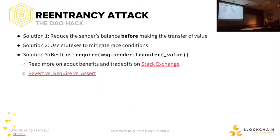There's also solution three: use require(message.sender.transfer(value)). What transfer does is it checks whether balances are correct, so you don't need to mess so much with balances manually. The require statement is very similar to assert — if it fails, the function will fail and the remaining ETH and state is reverted. We'll talk later about the difference between revert, require, and assert.